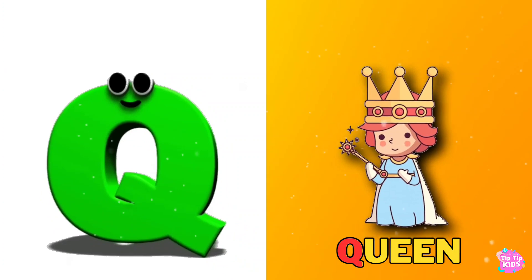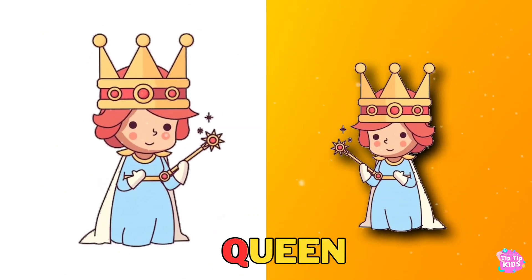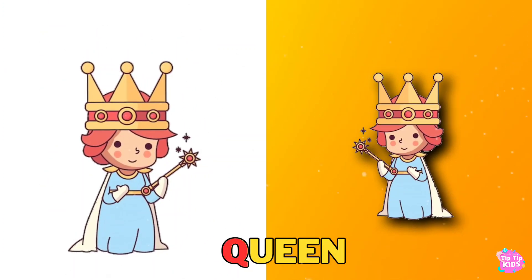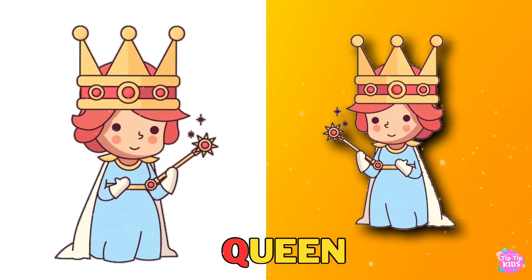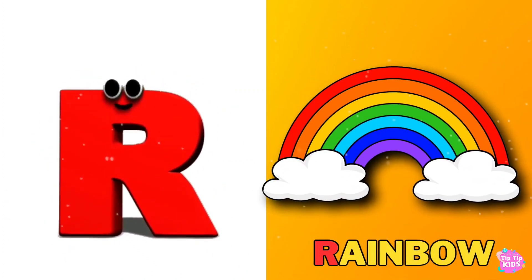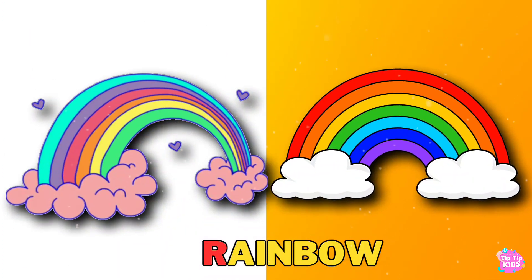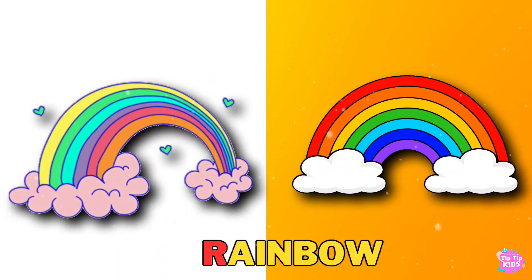Q is for Queen. Q, Q, Queen, Q, Queen, Q, Queen. R is for Rainbow. R, R, Rainbow, R, Rainbow, R.